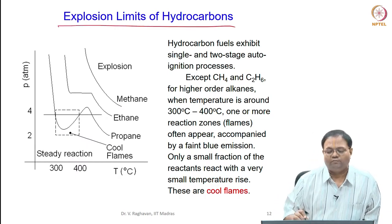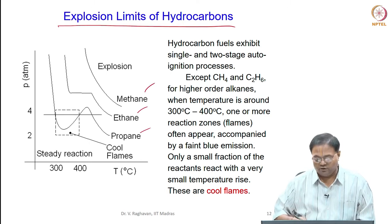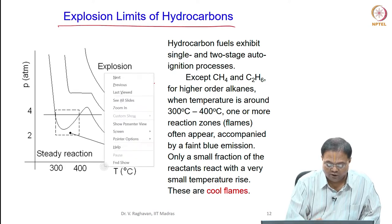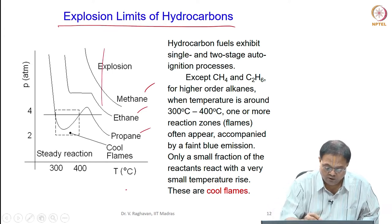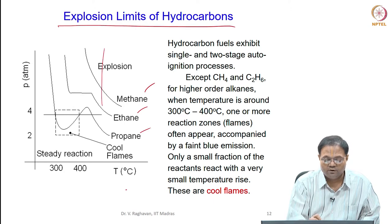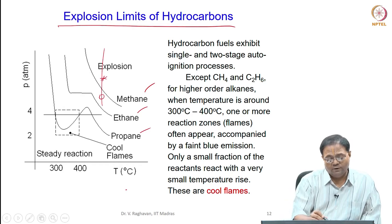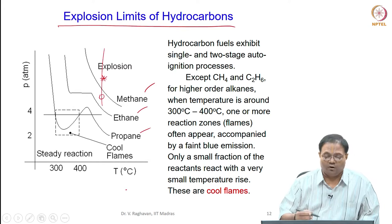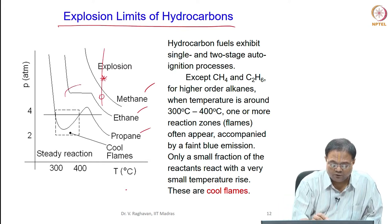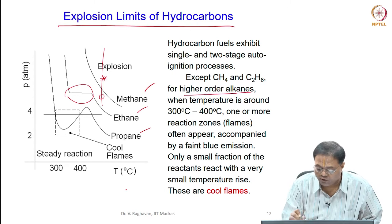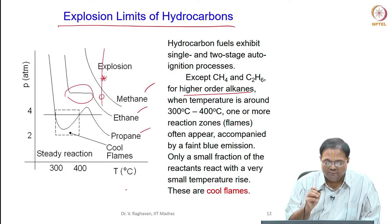Let us quickly see about the explosion limits of hydrocarbons like methane, ethane, propane - mainly the alkanes. The curve for methane shows explosion occurs only beyond a certain temperature. For a given temperature, explosion occurs only above a particular pressure - below that no explosion, above that explosion. For ethane you see some straight portion where the regime is extended slightly. When you go to higher order alkanes like propane and further, we see an interesting phenomenon.